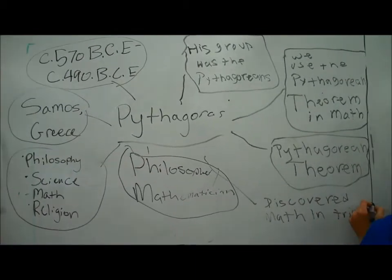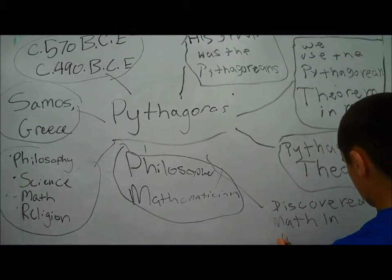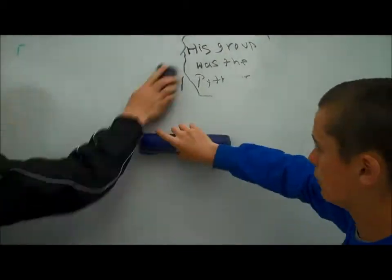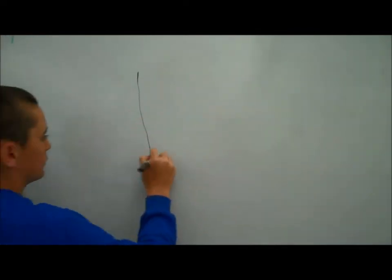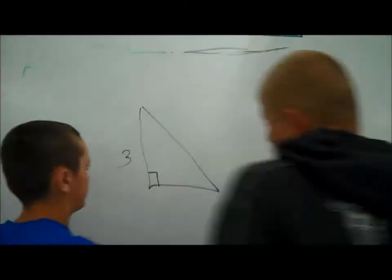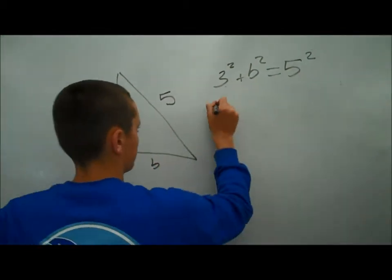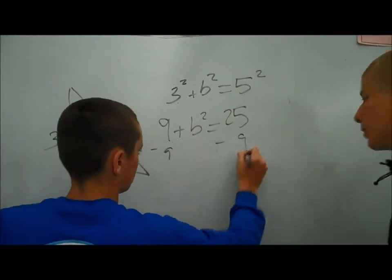In this problem, you have to figure out the unknown side of the right triangle, b. If you use the Pythagorean theorem, you know that 3 squared plus b squared equals 5 squared. This translates to 9 plus b squared equals 25. You have to subtract 9 from 25 to get 16. This means b squared equals 16. When you find the square root of 16, b equals 4.